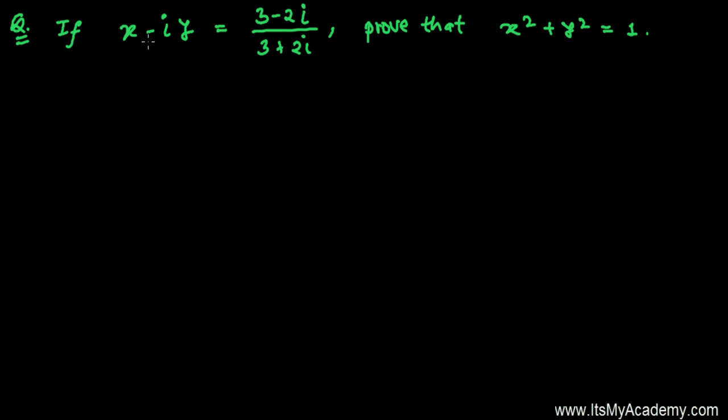Here the question is saying if x - iy = (3-2i)/(3+2i), then prove that x² + y² = 1.